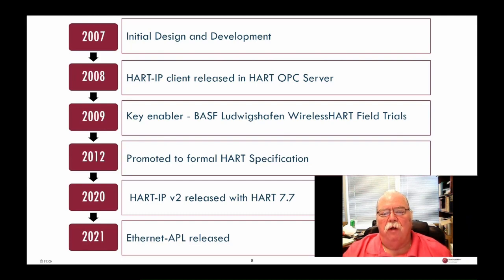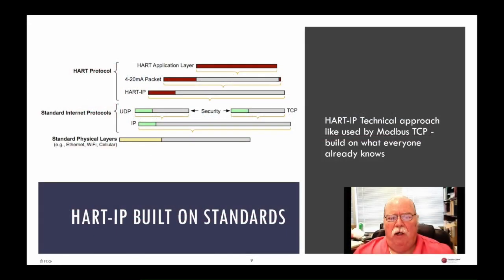The specifications have always supported both Hard IP I/O systems and Hard IP field devices. Based on nearly a decade of field experience, clarifications and improvements to the Hard IP specifications are underway and will be included in the HART 7.7 specifications. Ethernet APL will become available in 2021 and will present many more opportunities for Hard IP field devices. Hard IP is built upon ubiquitous internet protocol standards — there was strong feeling within the HART community that we did not want to reinvent the wheel, but rather build upon something well-proven.